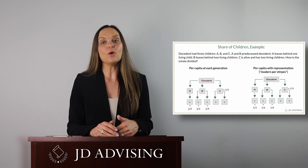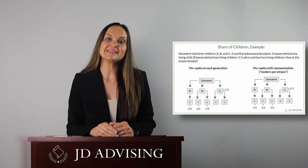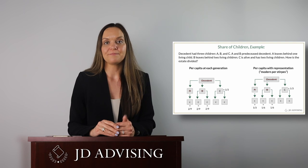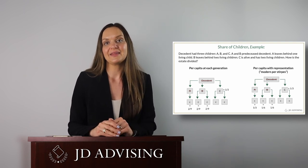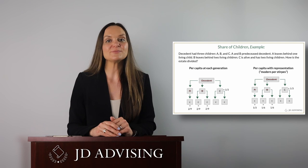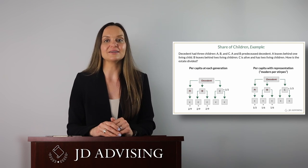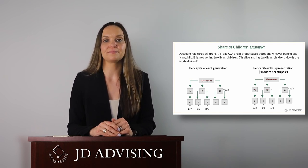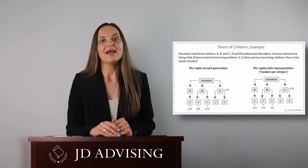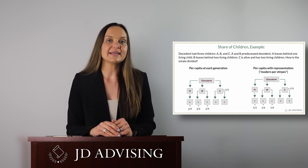To go over an example: let's say a decedent had three children — A, B, and C. A and B predeceased the decedent. A leaves behind one child. B leaves behind two children. C is alive and has two living children. How is the estate divided?